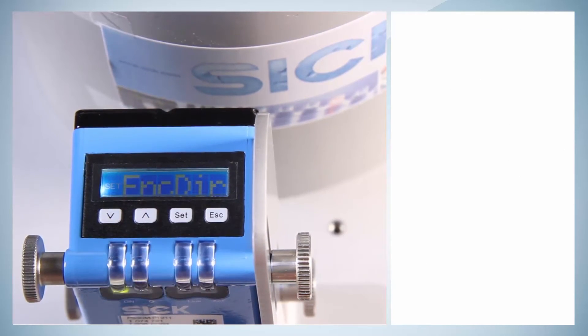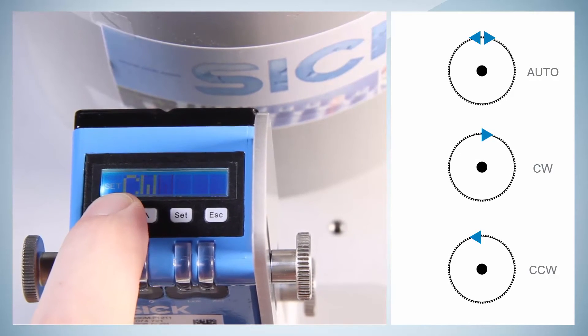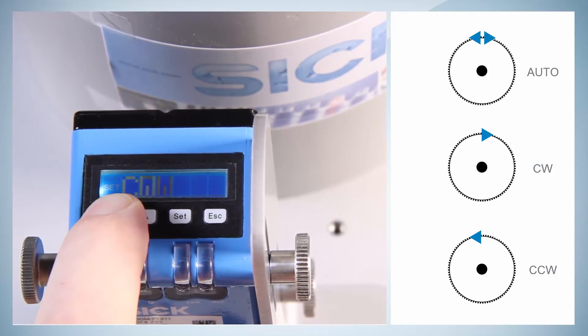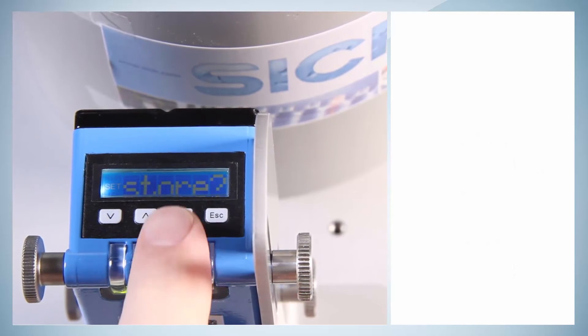The encoder direction decides between automatic direction detection, a clockwise or counter-clockwise encoder direction. These values have to be confirmed before getting back to the main menu.